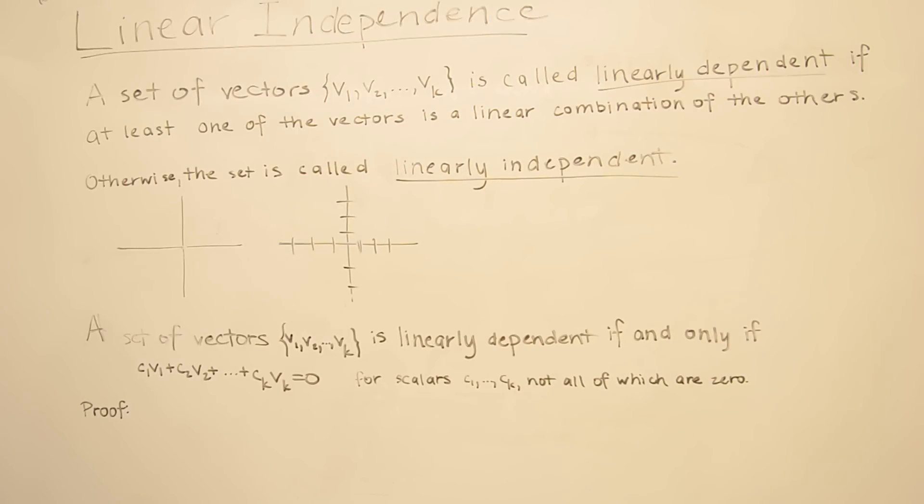We're going to examine the topic of linear independence. Formally, a set of vectors v1 through vk is called linearly dependent if at least one of the vectors is a linear combination of the others. Otherwise, the set is called linearly independent.